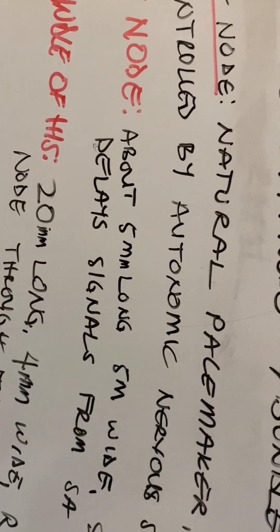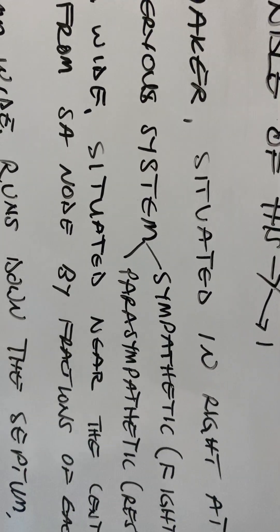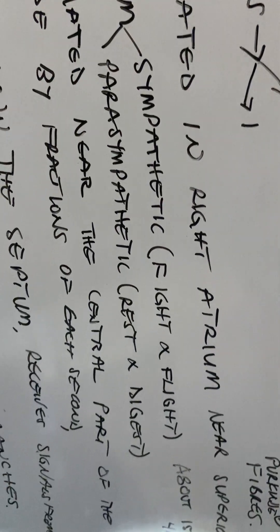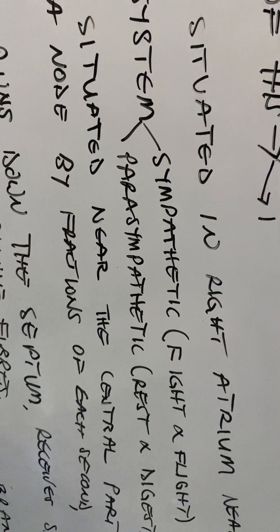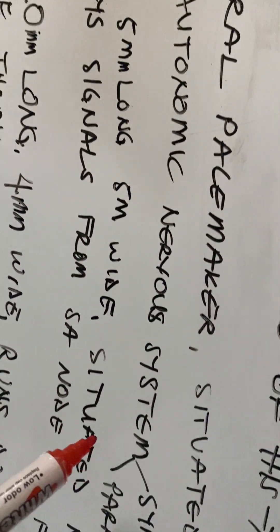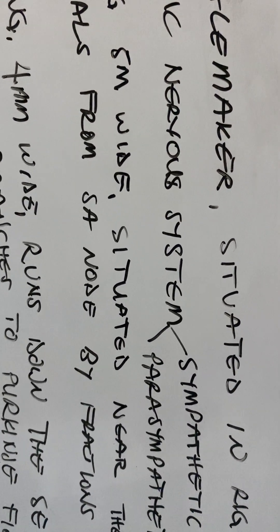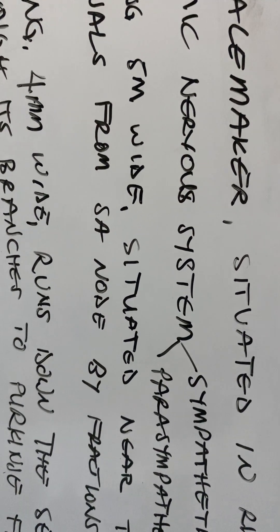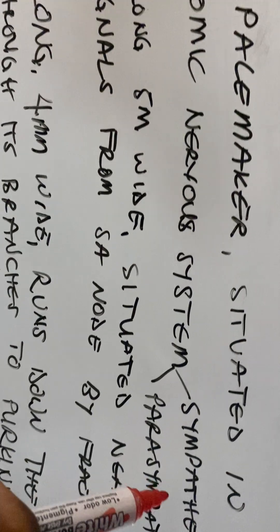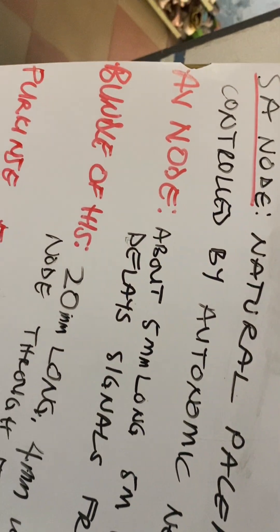The SA node is controlled by the autonomic nervous system, which comprises the sympathetic and parasympathetic systems. The sympathetic represents flight or fight, and the parasympathetic represents rest or digest. If the heart needs to beat faster — for example, when you're running — the sympathetic system will act on the SA node to raise the heart rate. If it's about rest and digest, the parasympathetic nervous system will be stimulated to act on the SA node.